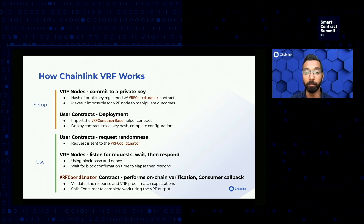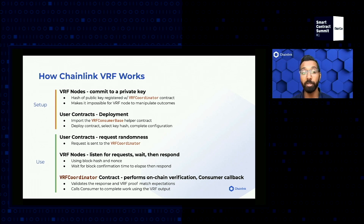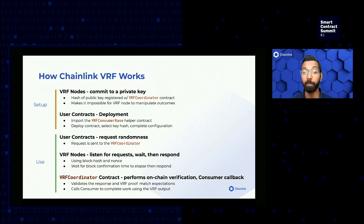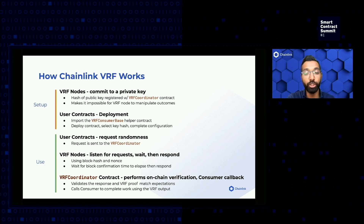Once setup is complete, you are ready to use Chainlink VRF, which breaks down into three broad steps. Consumers submit requests for randomness. The VRF node listens to the log events any time a request is submitted, waits for a number of confirmations to create space between the initial request and the response submission, and then provides that response back to the users. The VRF coordinator then performs an on-chain verification, calls the consumer contract's fulfill randomness function, and therefore completes the full cycle.